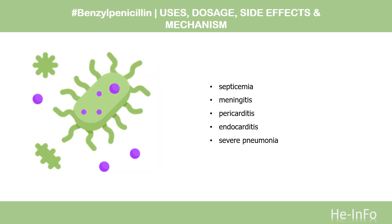Benzylpenicillin is used for the treatment of severe infections caused by penicillin G susceptible microorganisms when rapid and high penicillin levels are required, such as in the treatment of septicemia, meningitis, pericarditis, endocarditis, and severe pneumonia.